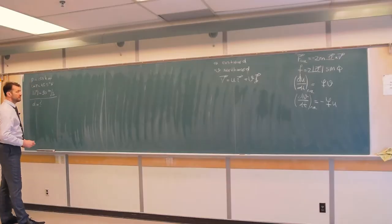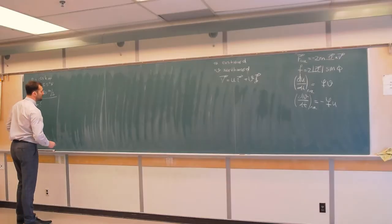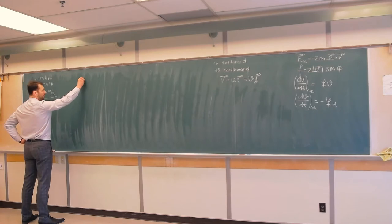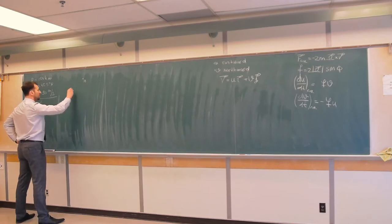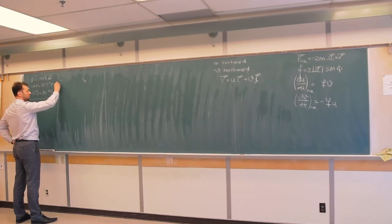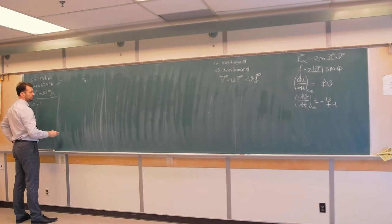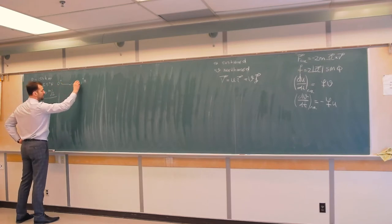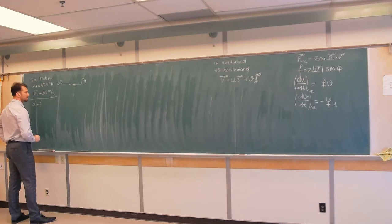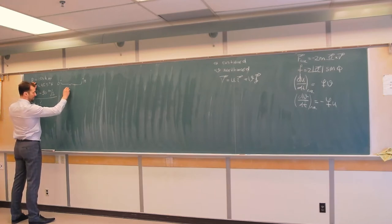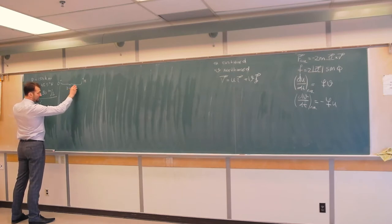Of course it is always useful to first schematize problems like this. If over here we have Montreal and over here is Ottawa, then the distance between these two cities is given and that is 150 kilometers.